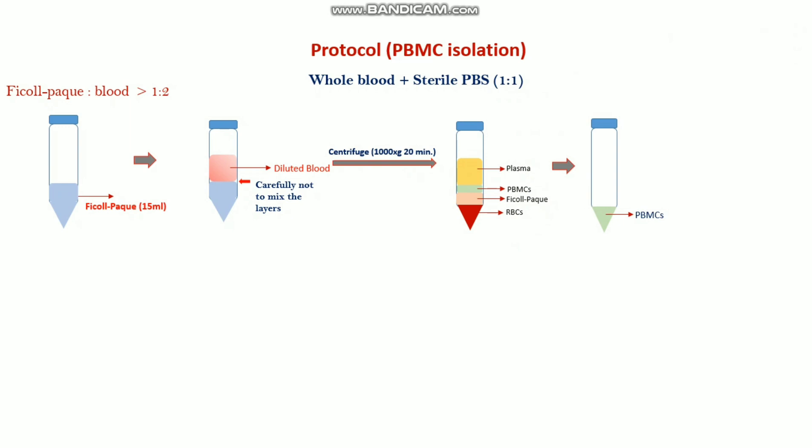Very gently discard the plasma layer, then collect the PBMC into another sterile tube. Wash it twice with sterile PBS and collect the PBMC. This is a simple process but you need to be very careful at each and every step.